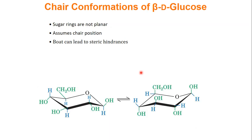We draw sugars flat on paper in the ring form because they're easier to see. But in reality, they're not planar molecules — rather, they assume the chair conformation, as shown here. You can also have a boat position, but the boat position means a carbon is pointing upward and leads to steric hindrance. In the chair, the different sides can flip — this one flips down, this one flips up — but you're really not going to be in the boat because it leads to steric clashes.